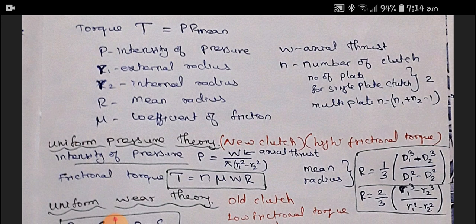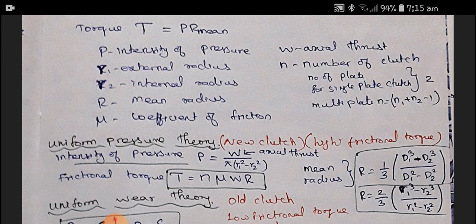For example, in a multi-plate clutch, the number of contact points: if the driving plate has 6 and the driven plate has 5, then N1 is 6 and N2 is 5. Therefore, 6 plus 5 minus 1 equals 10 — that is the number of contact points for the multi-plate clutch.